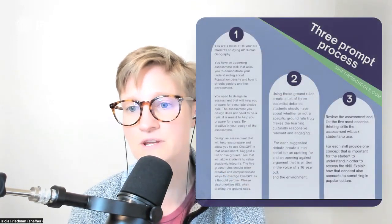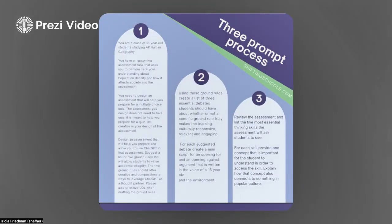We have three prompts specifically using the AP Human Geography course. The first prompt invites ChatGPT to help redesign a formative assessment task. I've given it parameters for what the assessment is meant to do and value, and asked it to give me five ground rules. After that output — which is inside the free guide — I then ask ChatGPT to use those ground rules to create a list of debates. I want students talking, arguing, and questioning these ground rules so that we can generate better ones.